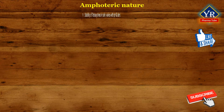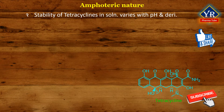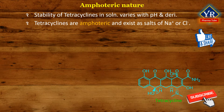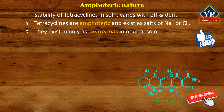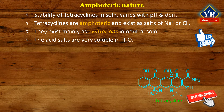Amphoteric nature of tetracyclines. Stability of tetracyclines in solution varies with pH and derivative. The tetracyclines are amphoteric, meaning that they form salts with both strong acids and bases. Thus, they may exist as salts of sodium or chloride. In other words, they exist mainly as zwitterions in neutral solution, depending on the pH of the environment. Zwitterions are molecules having both positive and negative charges in the same molecule.